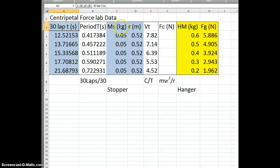Now, when you've got this stuff, you want to take your 30 lap time and divide it by 30 to get the period. Now, we're talking about circular motion. Period means one lap. So, 30 laps divided by 30.